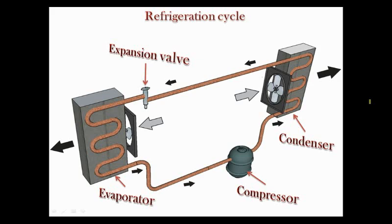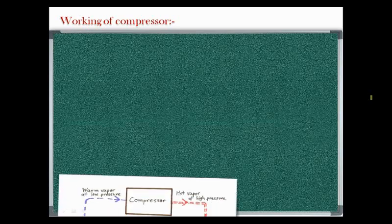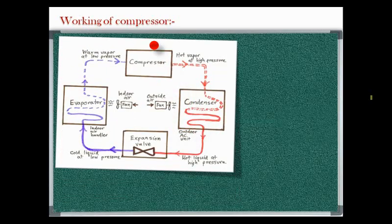We will begin our discussion with the compressor. The compressor is also known as the heart of a refrigeration system. It keeps the refrigerant flowing through the system at a specific rate of flow and at a specific pressure. The compressor, located between the evaporator and condenser, has two important lines: a suction line that is a low pressure line, and a discharge line which is a high pressure line.